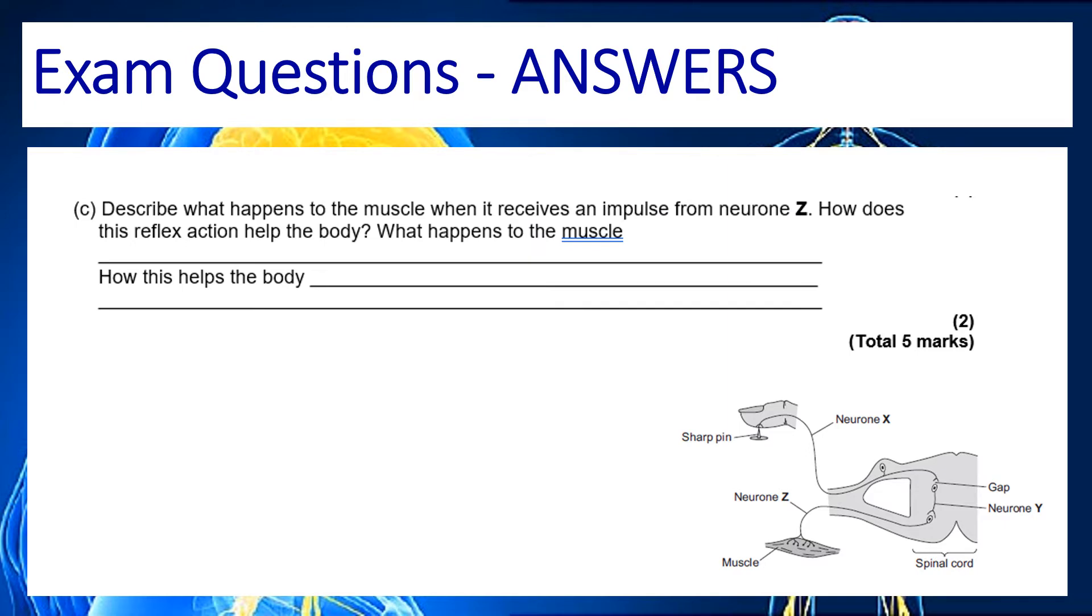So we're being asked here what happens to the muscle. The word we need to use here is contract and when we say the muscle contracts what we mean is it pulls in and as it does that it's going to move the finger and this is how it helps the body. It moves the finger away and it avoids pain. So we can either say it moves the finger away or we can say that we are avoiding a hazard or avoiding pain. Any of those will be fine.